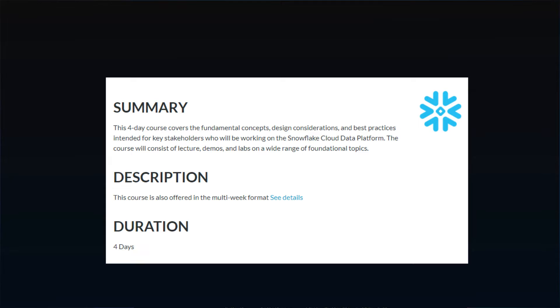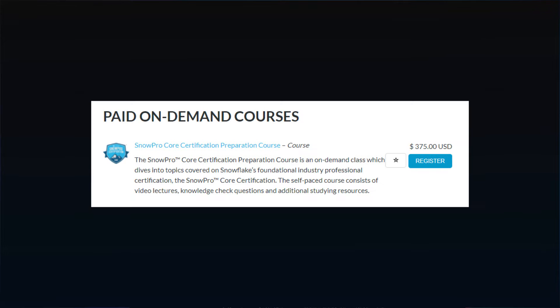This sounds like a lot, and it is, but there are some options to tackle it. Snowflake offers an instructor-led four-day course for $3,000, which is not too reasonable unless your company is paying for it. They also have an on-demand self-study course for $375, which is more doable, but it's only five hours — which seems a bit low for what the exam expects. It's recommended in conjunction with the $3,000 class and requires hands-on experience. Since it doesn't list covered topics, I can't really ascertain how much value you're getting for $375, so it leaves me with a lot of doubts.